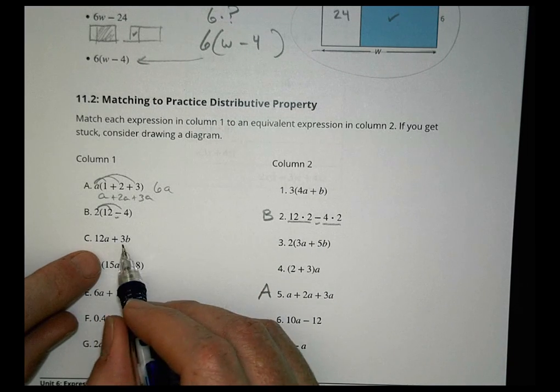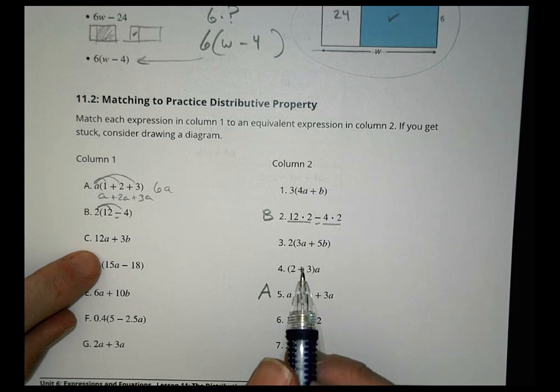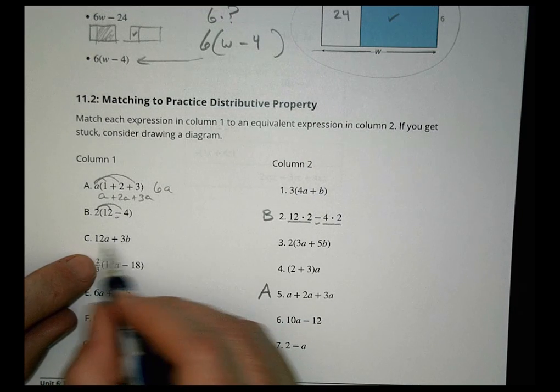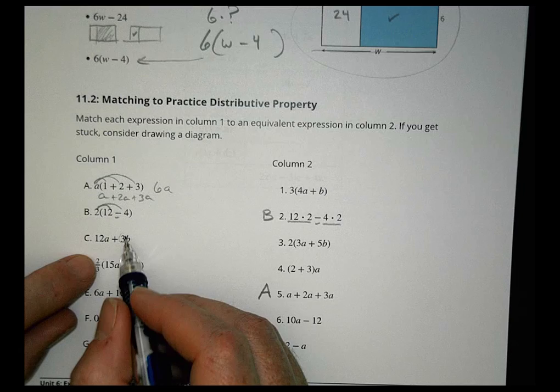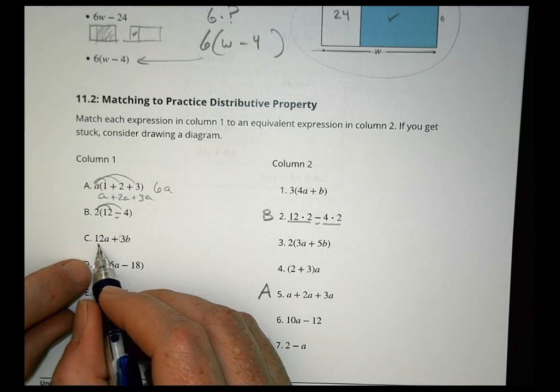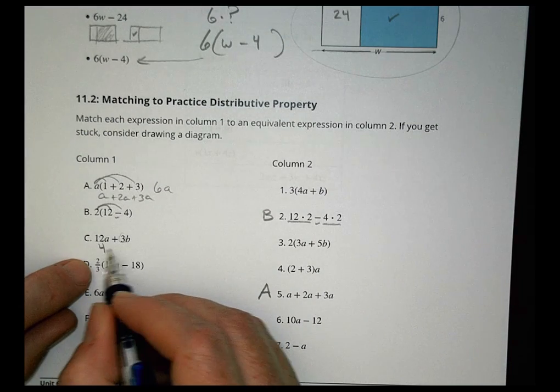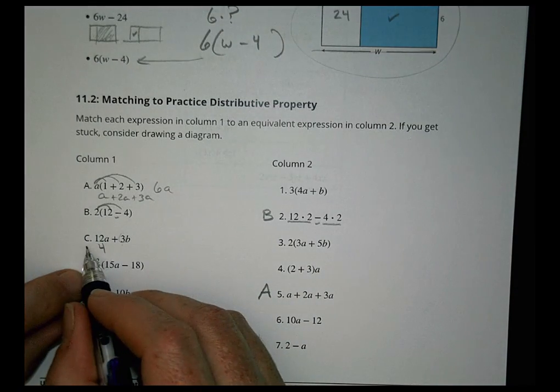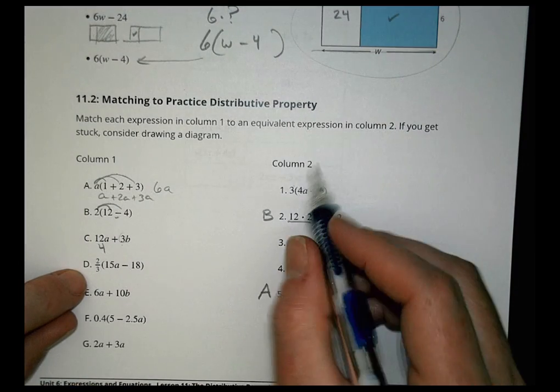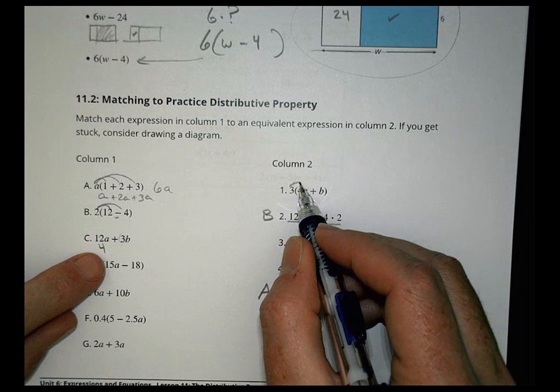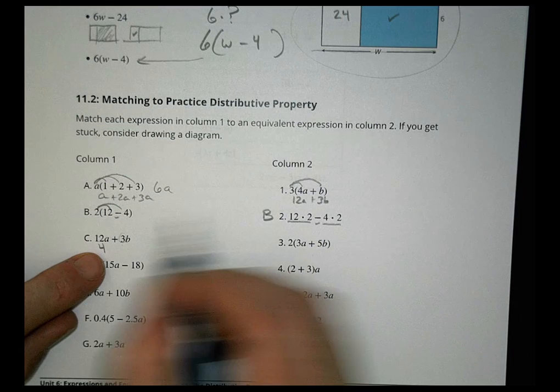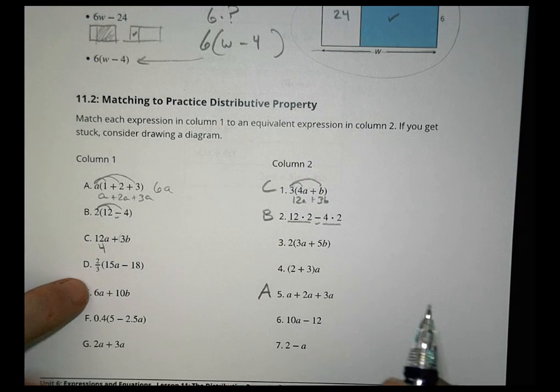Over here, we have 12a plus 3b. I can see they each have something in common. They each have a 3 in common. There are 4 threes in 12a and 1 in 3b. So do we see anything where we can take a 3 out? 3 times 4a is 12a and 3 times b is 3b. So we find the match right there.